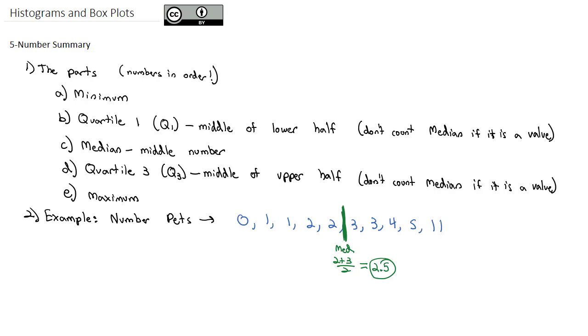Then I'm going to find my quartiles. In the bottom half, there are five numbers. And I notice that the third number is in the middle of the bottom half. That is my quartile 1. Similarly, on the top half with five numbers, the third number is in the middle of those. That is my quartile 3.